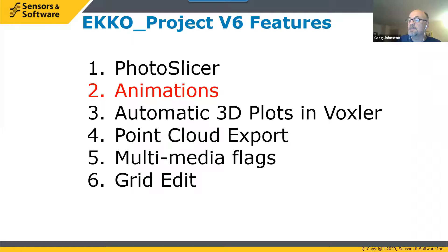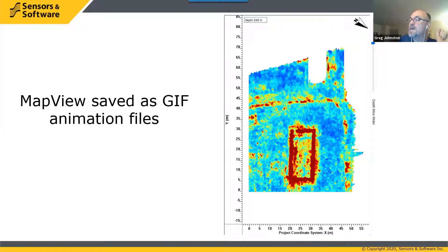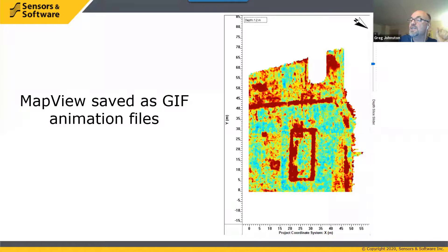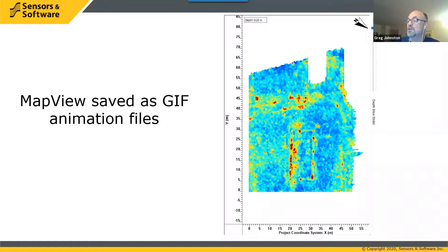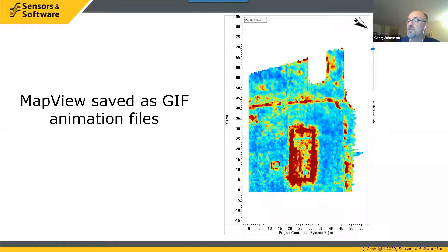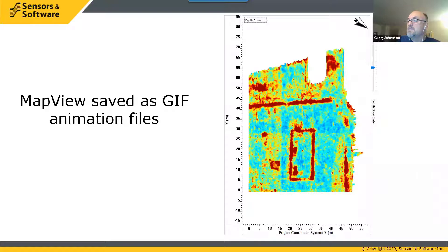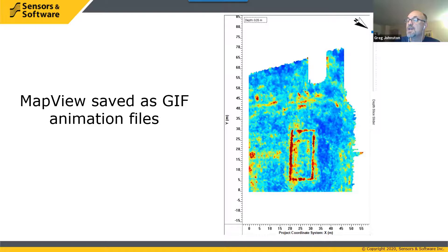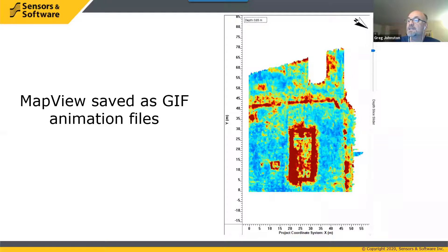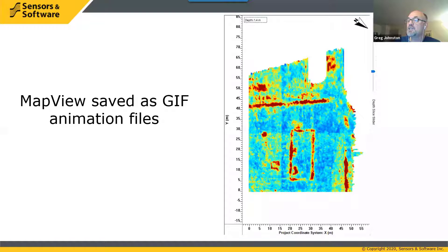Let's move on to the next feature: animations — specifically GIF animations. ECHO Project users can now easily create GIF animation files. These animations are helpful to spot features in your data as part of data analysis. GIF files are a great value-add deliverable to send to clients along with the PDF summary report and Google Earth files. GIF animation files play on standard pre-installed Windows programs such as Windows 10 Photo Viewer, making them easy to share. Animations can be made from the map view window and can include interpretations, lines, GPS path, and flags.